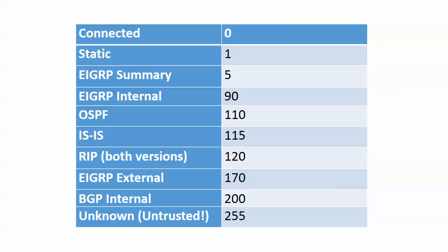You're going to be introduced to three different EIGRP route types. The regular internal EIGRP route has an administrative distance of 90. The EIGRP summary route has an AD of 5. OSPF is 110. IS-IS is 115 — that's more of a service provider protocol; unless you study for those exams specifically you may never configure IS-IS, but there's plenty of it out there and you should know its AD is 115.